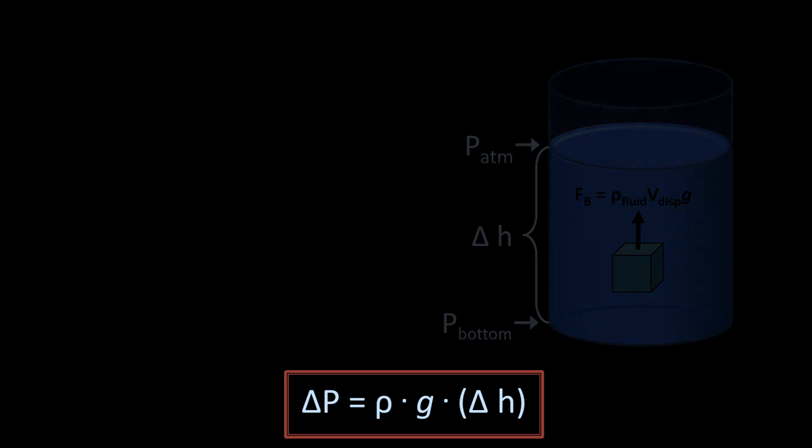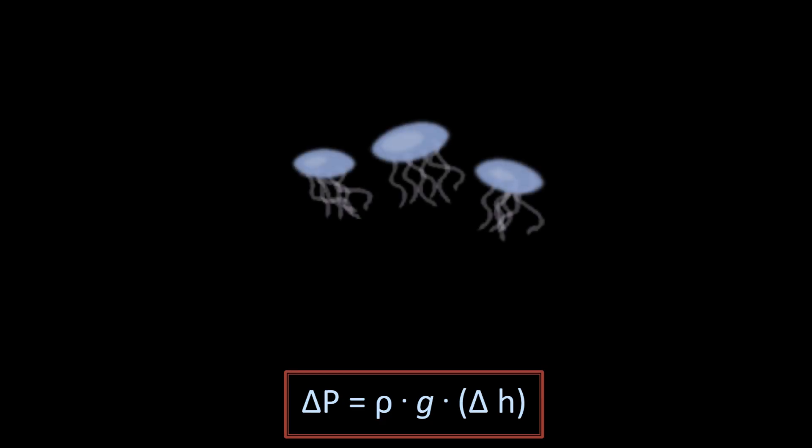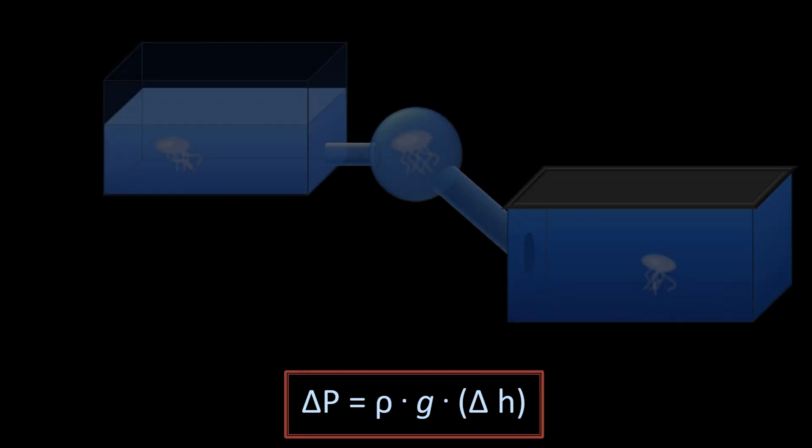An interesting consequence of this hydrostatic pressure equation, which may or may not be immediately obvious, is that the pressure at any given depth is independent of the shape of the container or the path that the pressure must be transmitted along. For example, I could have a collection of rare and exotic jellyfish that I want to display in my home, but to highlight their uniqueness, maybe I want to build an equally unique aquarium system in which to house them.